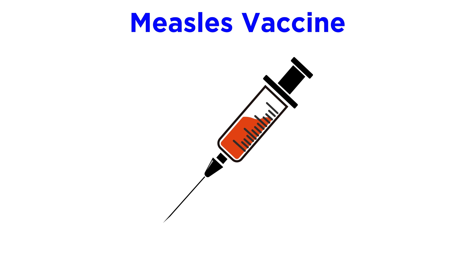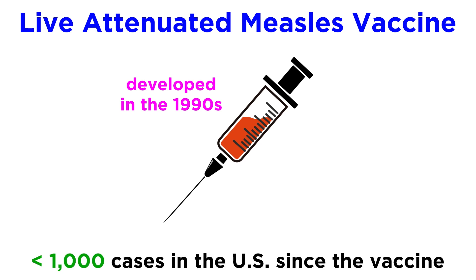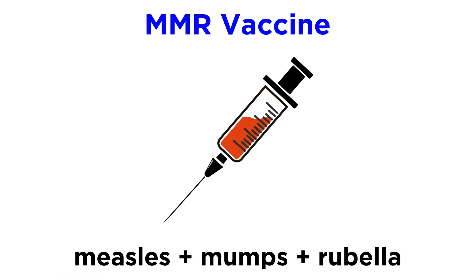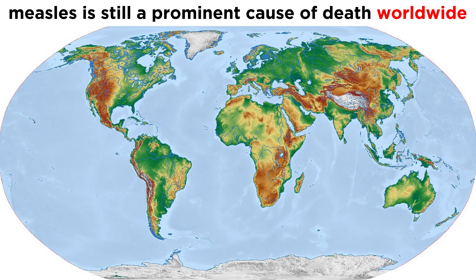Since the development of measles vaccines, and especially the live attenuated measles vaccine developed in the 1990s, fewer than a thousand cases have been reported in the United States. The measles vaccine is often combined with mumps and rubella, which is called the MMR vaccine, or combined with mumps, rubella, and varicella, and referred to as MMRV. Worldwide, however, measles is still one of the most prominent causes of disease and death in places where the population is unvaccinated.